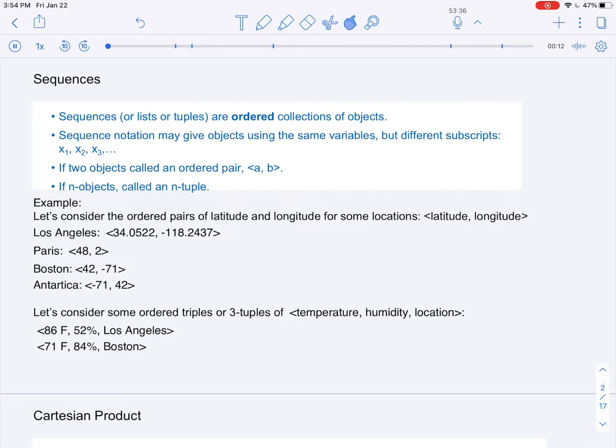Sometimes you may have already seen sequences given in notation where the same variable is used for the objects, but just different subscripts are used to tell the different objects in the order of the sequence, such as x1, x2, x3, and so forth.